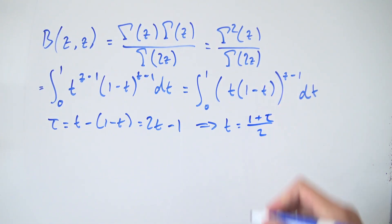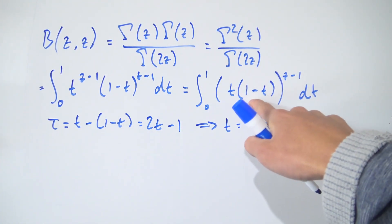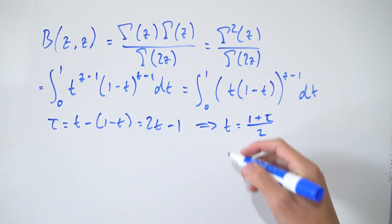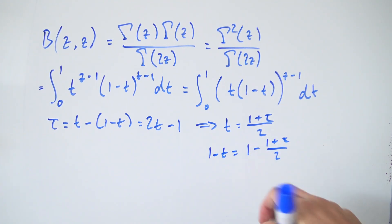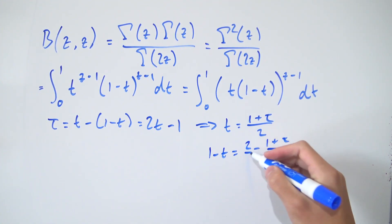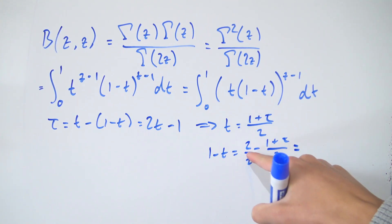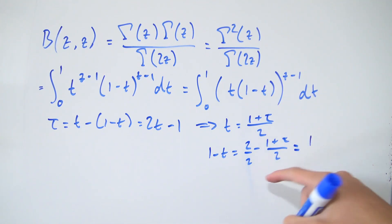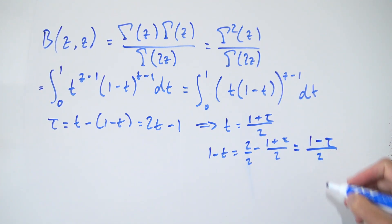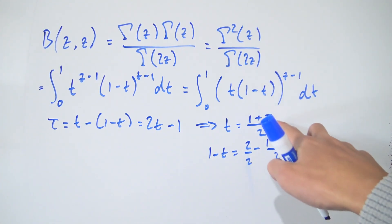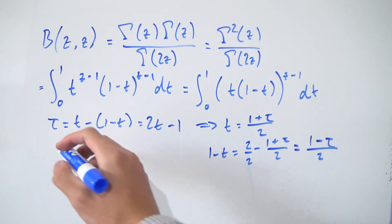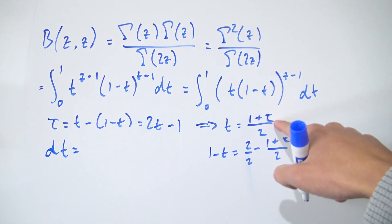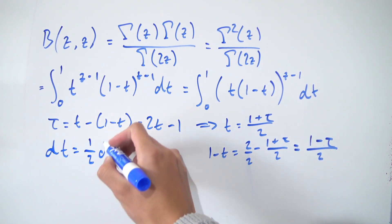So t equals (1 plus tau)/2. Then 1 minus t equals 1 minus (1 plus tau)/2, which is (2 minus 1 minus tau)/2, giving (1 minus tau)/2. That's nicely symmetric with our expression for t. For our differential, differentiating both sides gives dt equals one half d-tau.